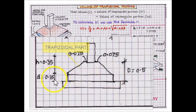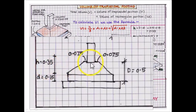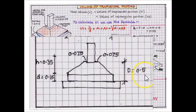The height of the rectangular part, d, is 0.15 meters, while the height of the trapezoidal part, h, is 0.35 meters. The total height of the footing, big D, is 0.5 meters.